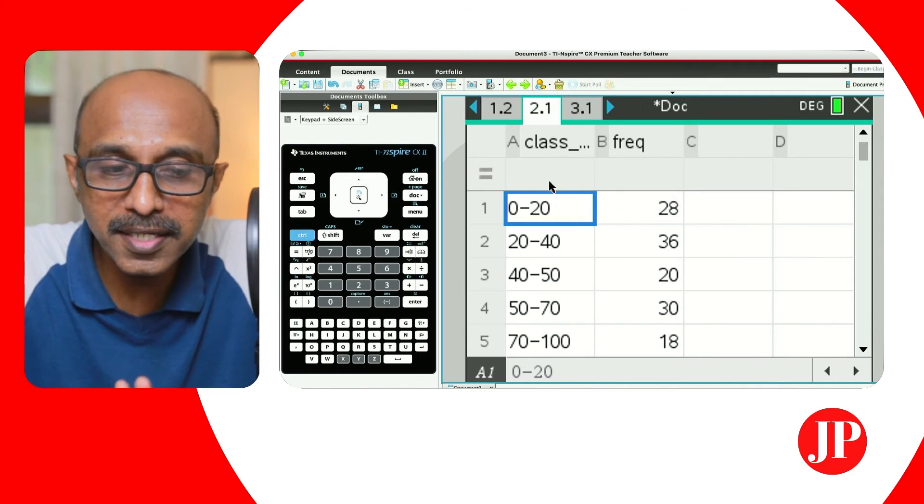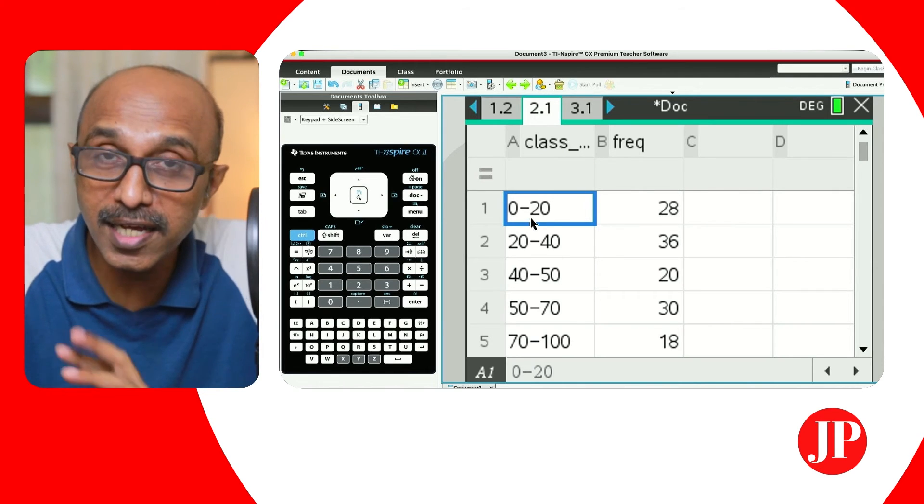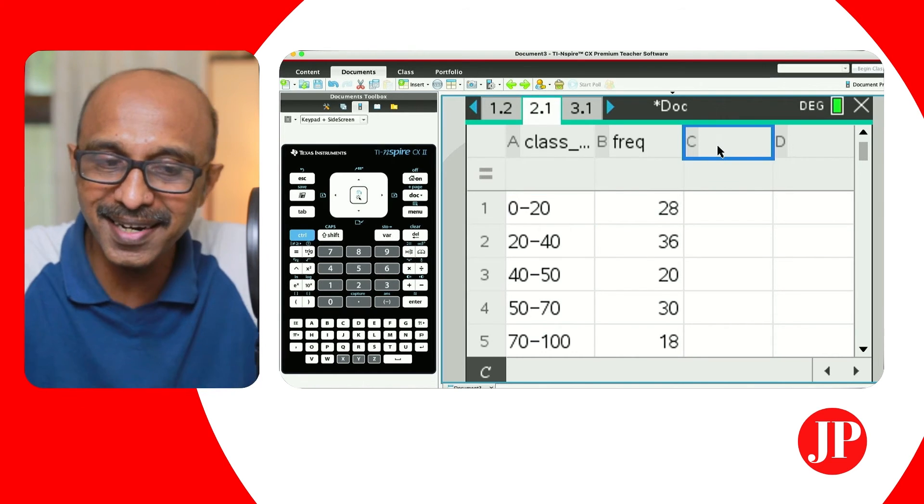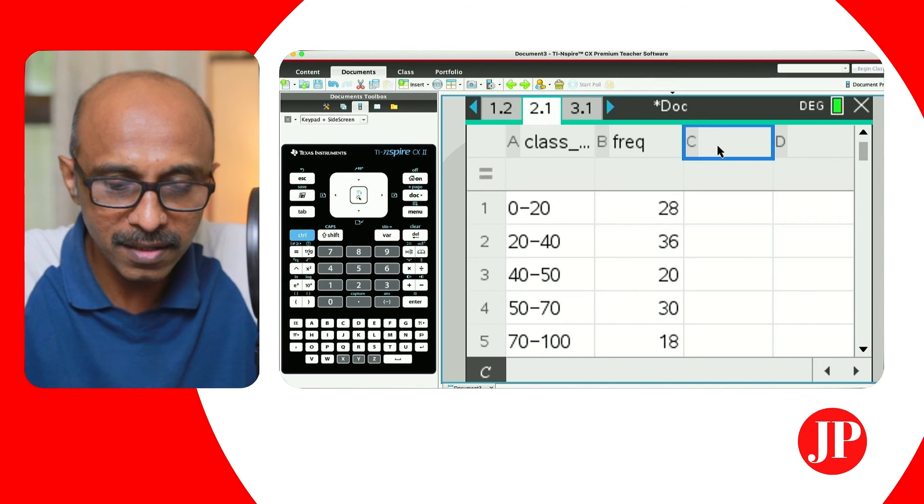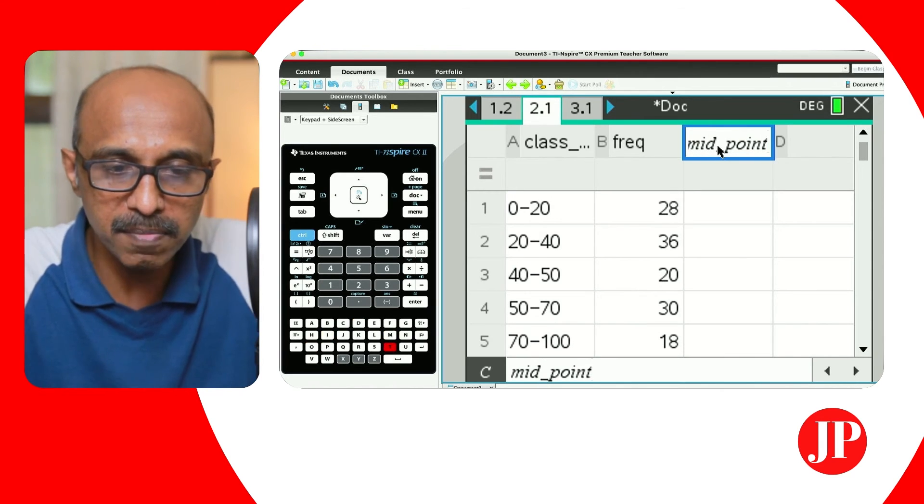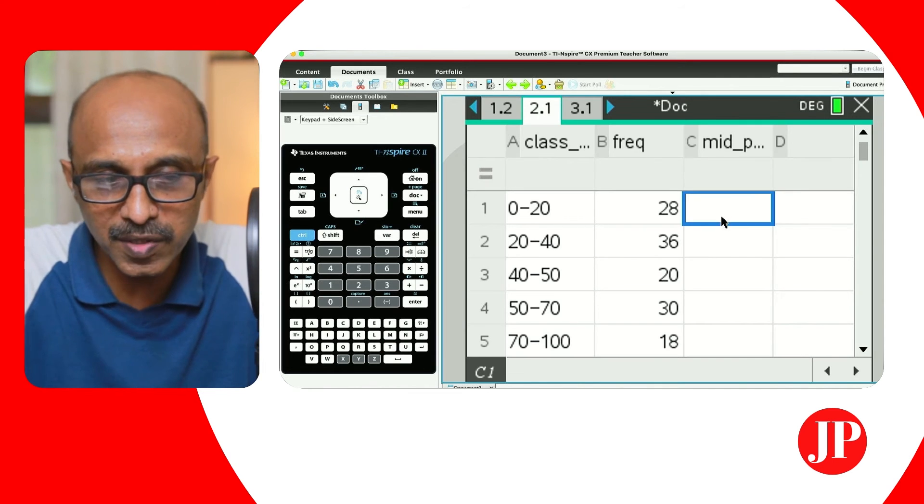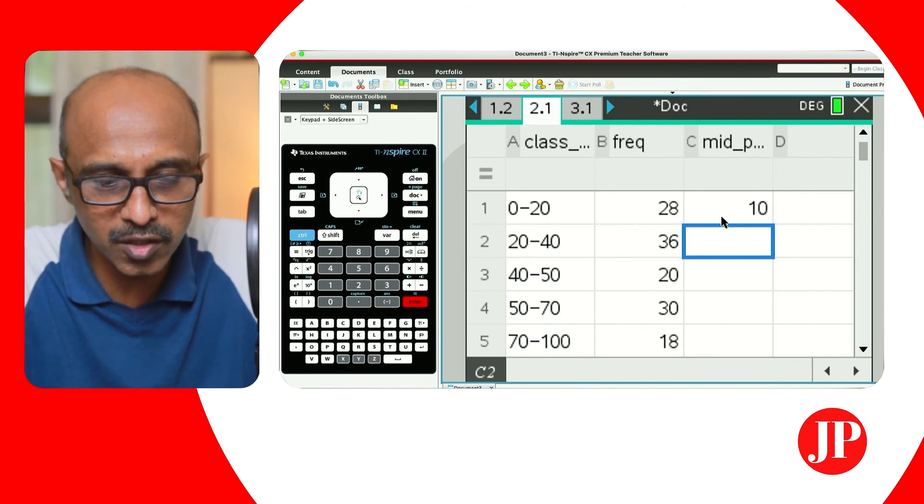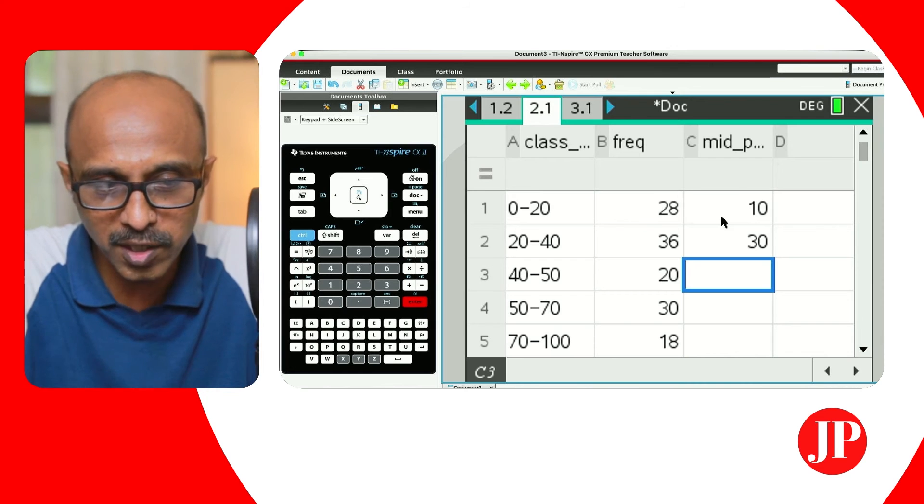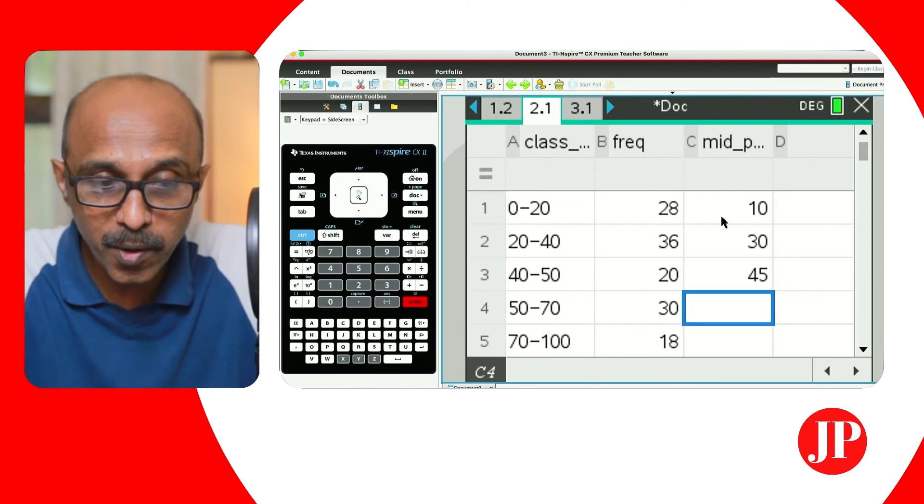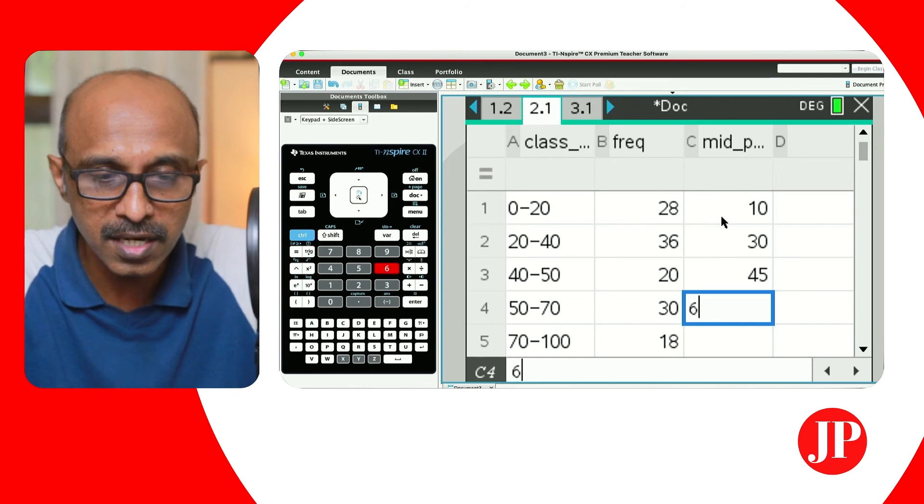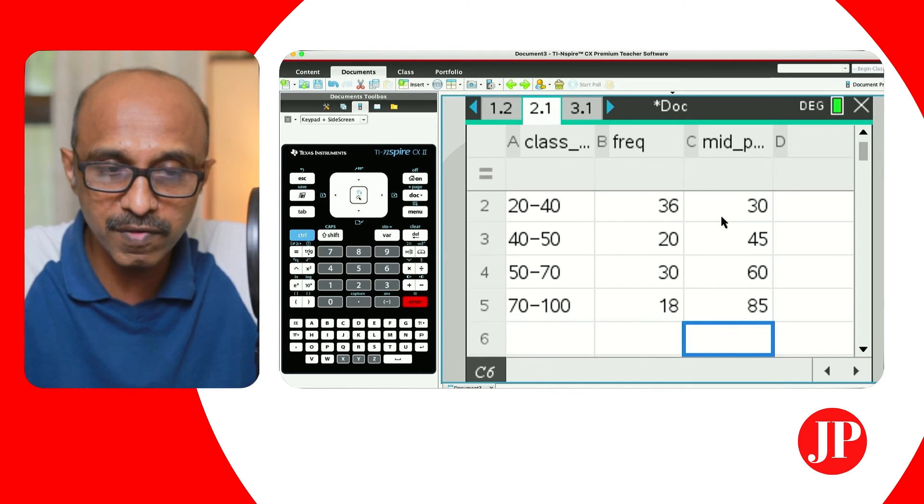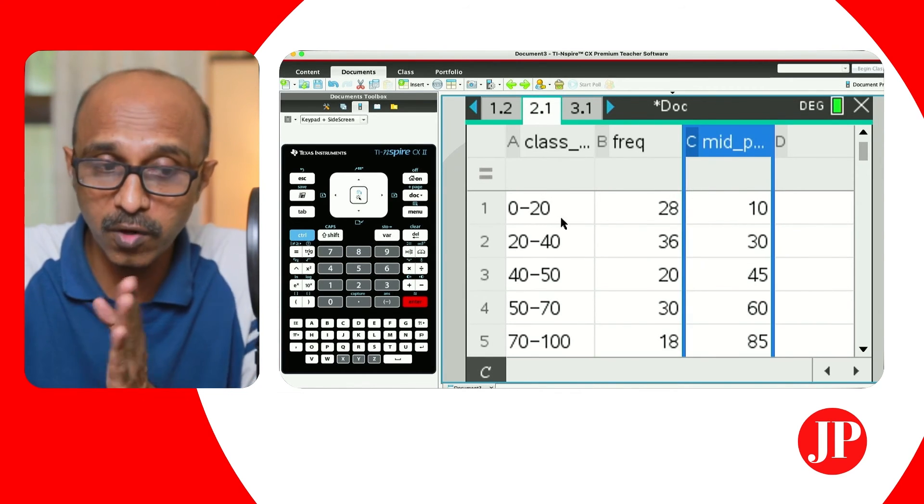So here we are on yet another list and spreadsheet page where I've already entered the class intervals as it was given in that question. And I've entered the frequency for each of those intervals. The first thing that you got to do is create another list. So I'm just going to call it midpoint. This is the midpoint of each of the class intervals, and I'm just going to say okay, between zero and 20, the midpoint is going to be 10. The midpoint for the class interval 20 to 40 is going to be 30. The midpoint of 40 to 50 is going to be 45. The midpoint of the interval 50 to 70 is going to be 60. The midpoint of the interval 70 to 100 is going to be 85. That's the first thing that you got to do. So we've created midpoints for the corresponding class intervals.